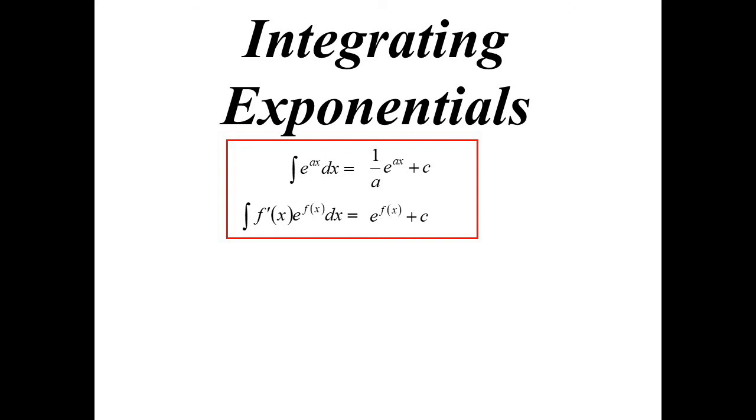So start off with a basic one, e to the 5x. Well, it's a linear function, so I can just say, well, that's 1 fifth e to the 5x plus, of course, a constant.